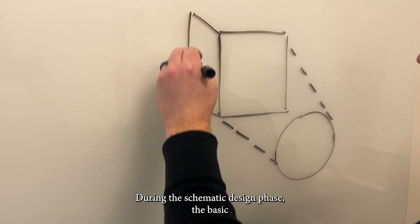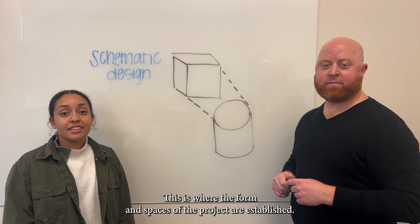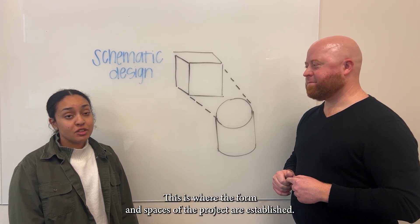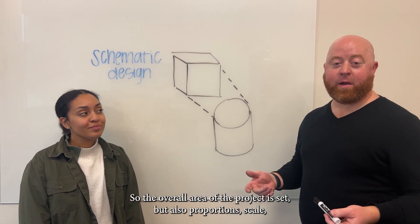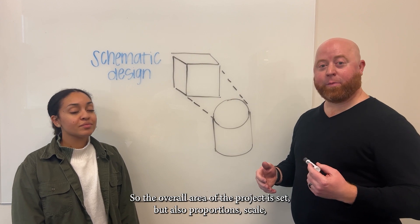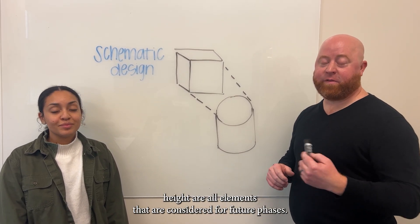During the schematic design phase, the basic form of the building starts to take shape. This is where the form and spaces of the project are established. The overall area of the project is set, but also proportions, scale, height are all elements that are considered for future phases.